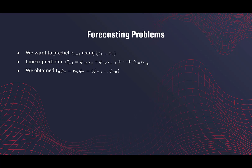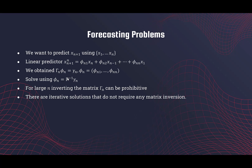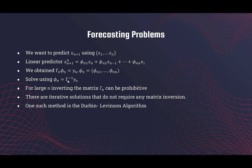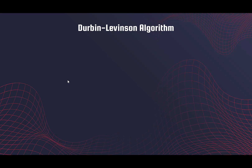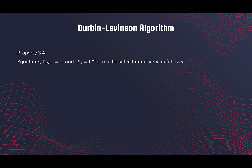We obtained this prediction equation last time. To get the phi coefficients from it, we basically invert the gamma matrix. The problem with this inversion is that if we have a large number of observations — if n is large — inverting this matrix can be a problem. Therefore, we are going to look at iterative solutions that bypass matrix inversion, and one such algorithm is the Durbin-Levinson.